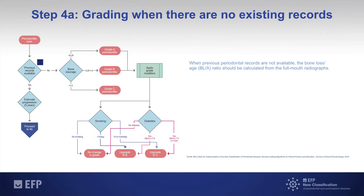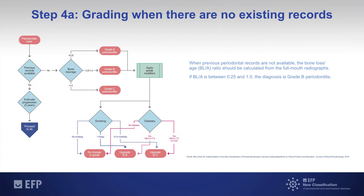Previous records are not available, so we need to evaluate the bone loss to age ratio, normally from the full mouth radiographs that we have used for the staging. If the bone loss to age ratio is between 0.5 and 1, then the diagnosis is grade B periodontitis, which should be the default progression for periodontitis.